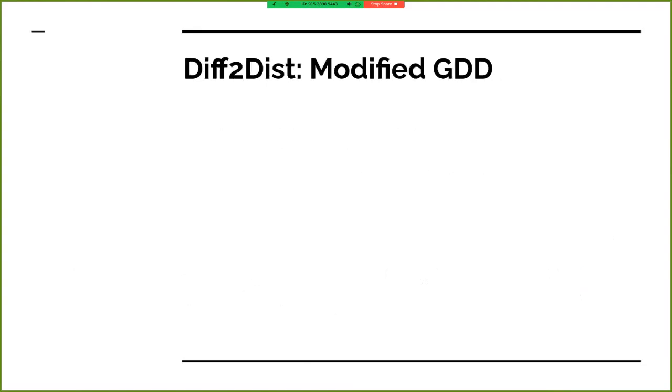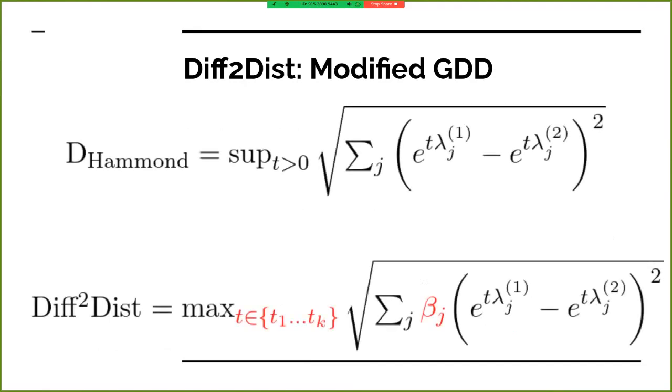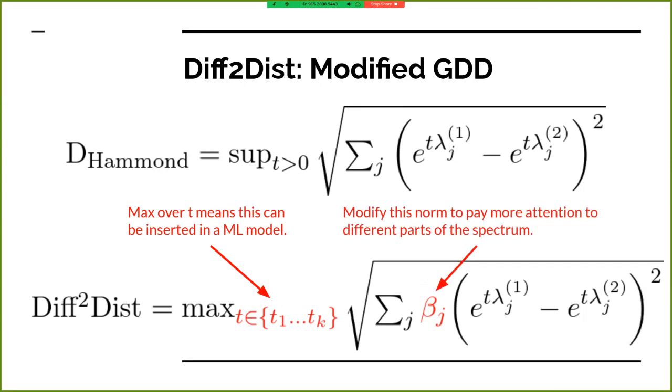I modify GDD in two ways. First, I replace the optimization over t with the maximum over a list of t values. Second, I change the flat norm into a weighted norm where the weights are learned.